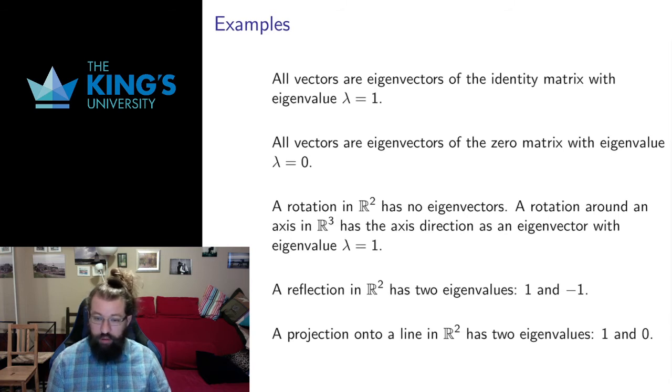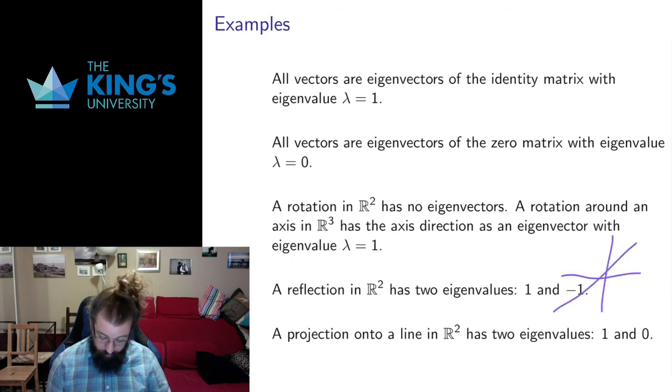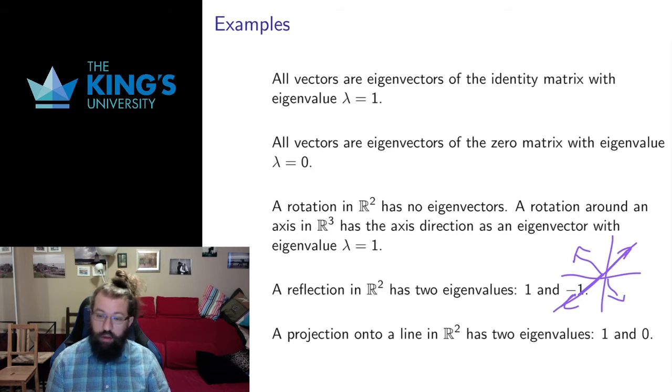A reflection in R2 has two eigenvalues, 1 and negative 1. If we think about a reflection over a line in R2, reflection over this line, then anything on that line doesn't change at all. So anything on that line has eigenvalue 1. Anything perpendicular to that line is directly flipped.